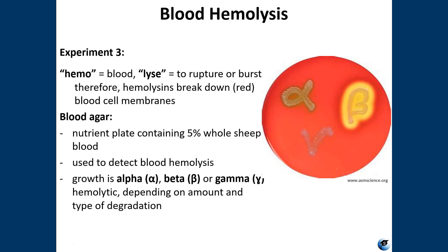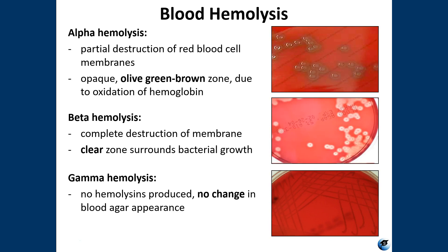Experiment three tests for the presence of exotoxins called hemolysins, which are able to destroy red blood cells and hemoglobin. Blood agar — sometimes called sheep blood agar — includes 5% sheep blood in a tryptic soy agar base and allows for differentiation of bacteria based on their ability to hemolyze red blood cells. The three major types of hemolysis are beta, alpha, and gamma hemolysis, depending on the amount and type of degradation. Alpha hemolysis is a partial destruction of red blood cells, producing a greenish-brown discoloration of the agar around the colonies.